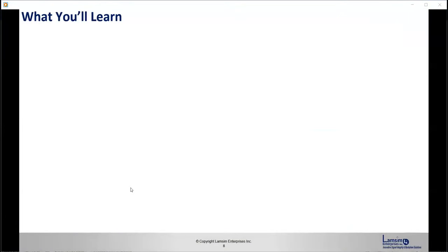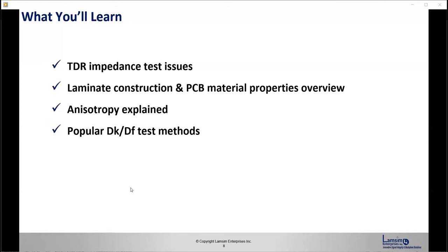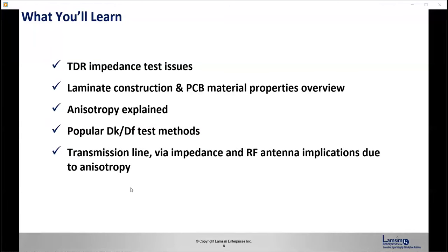Here's what we'll learn today. I'll start off talking about TDR impedance test issues. I'll go into laminate construction and PCB material properties and give an overview of that. I'll explain anisotropy. I'll discuss popular DK/DF test methods. Then I'll talk about transmission line impedance and RF antenna implications due to anisotropy. And finally, I'll give an example of dielectric anisotropic validation issues.